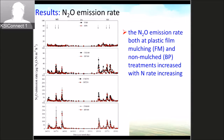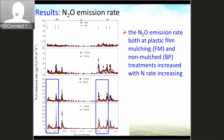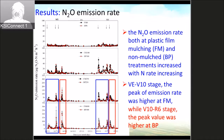At different growth stages, the peak of the N2O emission rate was different. Before the tasseling stage, the peak of emissions was higher in the non-mulching practice treatment.